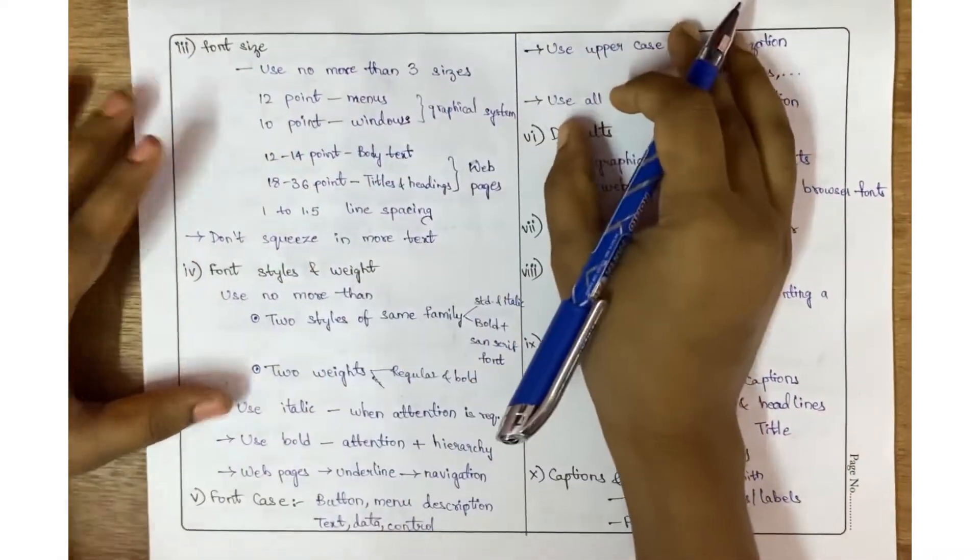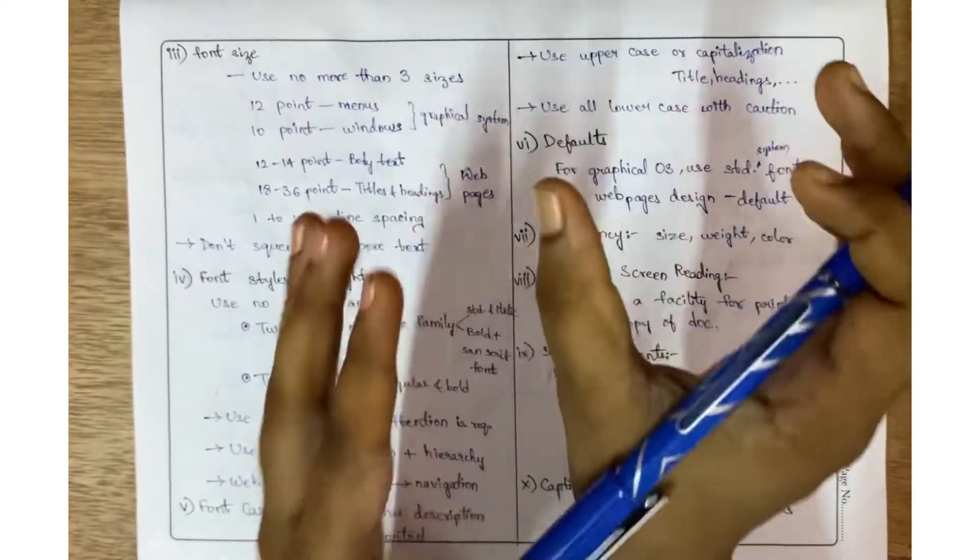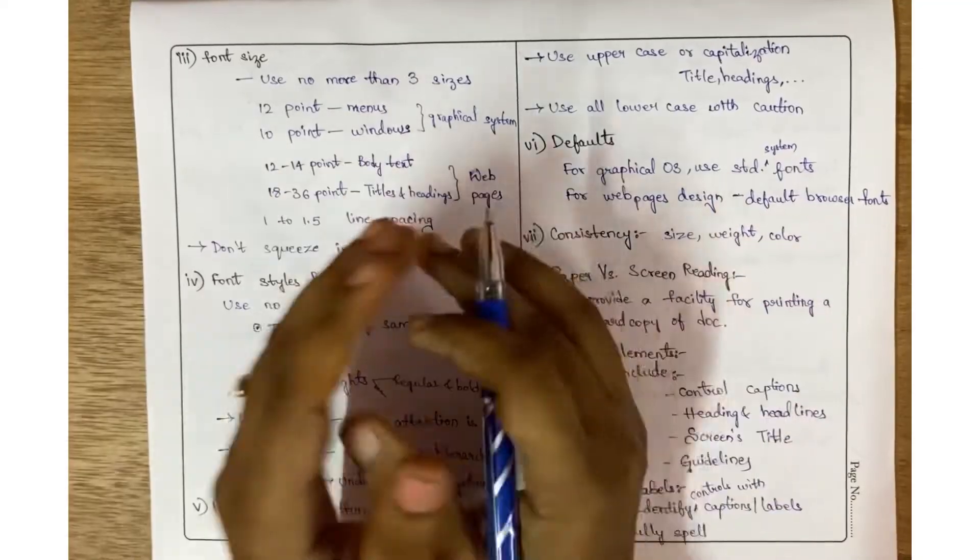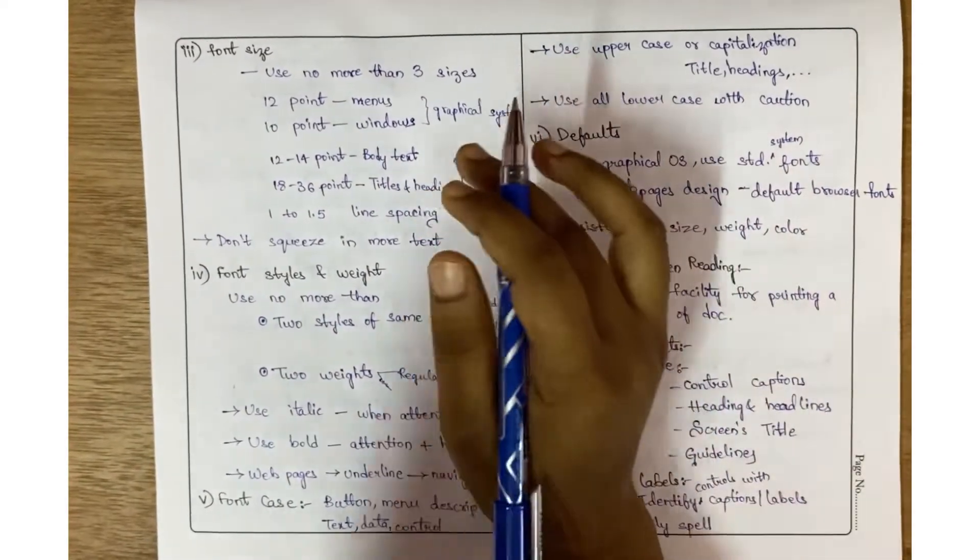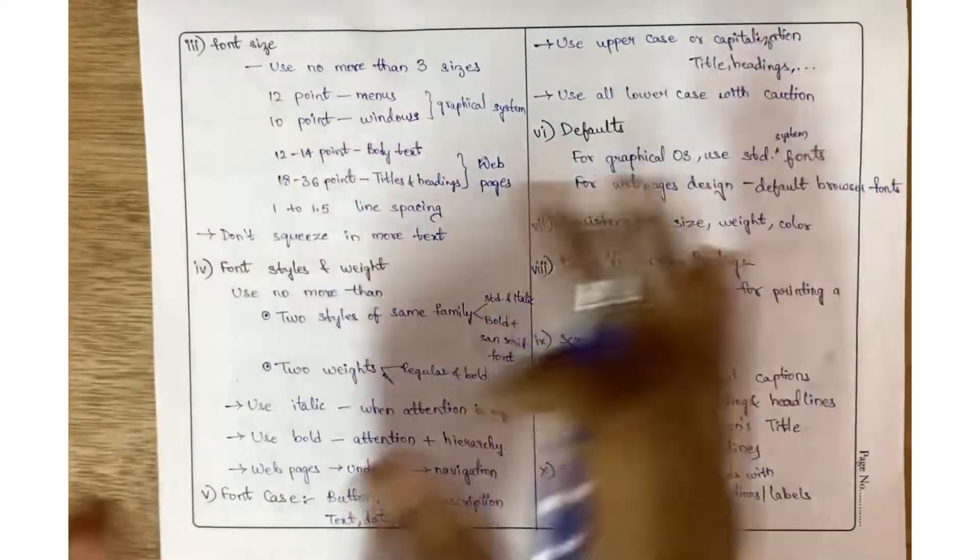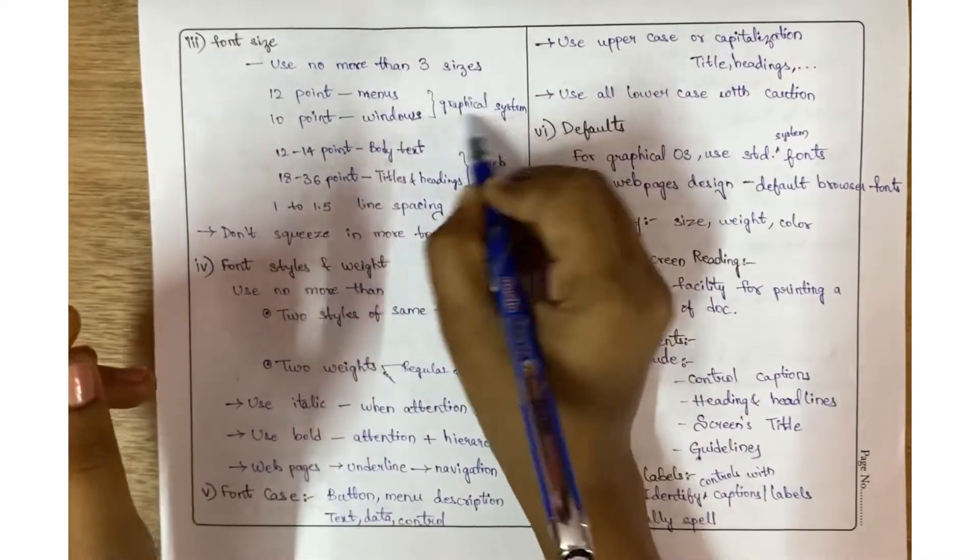Font size: we should not use more than three sizes. For headings we use 14 size and for content under it 12. That means one part should not use 10 and another part use 15, you should not do that.